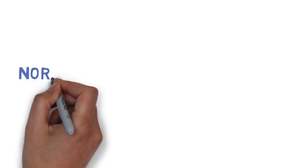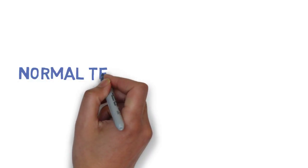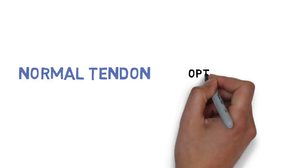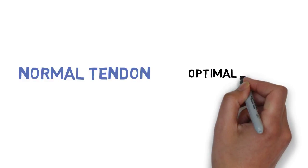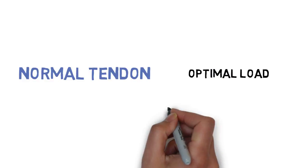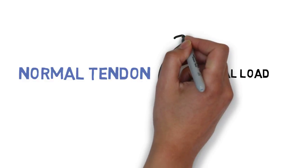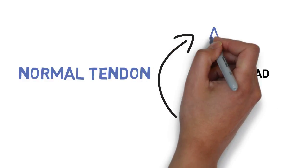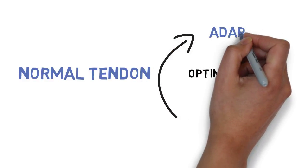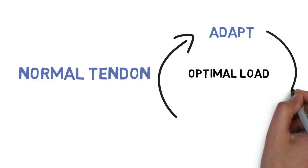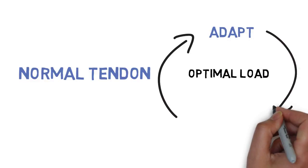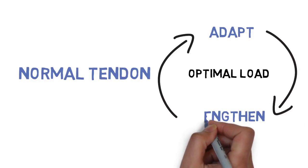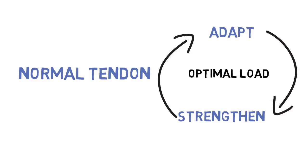When you get a normal tendon, you give it a load, it adapts and it strengthens. When the load is excessive or suddenly increased, then you go through the different stages of tendinopathy.